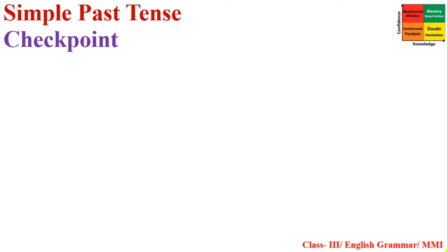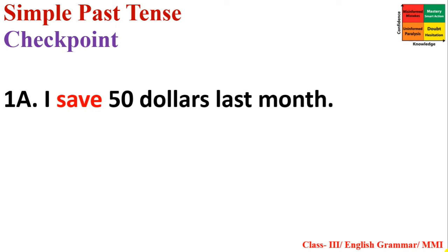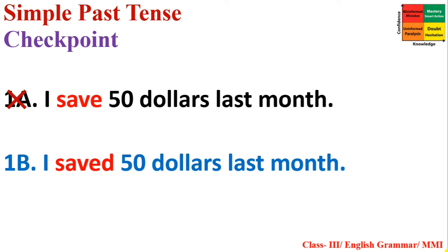Now we will do some checkpoints. There are six sentences in your book. First sentence: 'I save $50 last month.' This is not correct. Whenever the word 'last' is present in a sentence, the sentence will be Simple Past Tense, and we must use the past form of the verb. Here 'save' is the base form, so it is incorrect. The correction is: 'I saved $50 last month.'